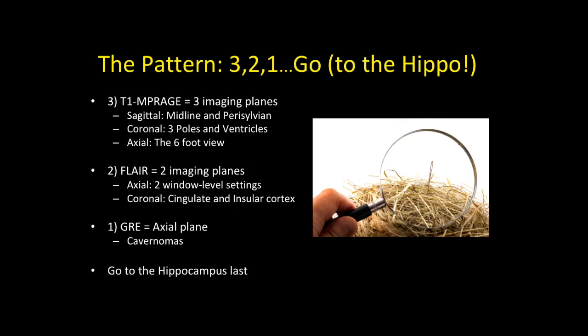My pattern, to make it catchy, is 'three, two, one, go to the hippocampus.' The three is for T1 MP-rage with three imaging planes — sagittal, coronal, and axial — each showing something a little different. The two is for FLAIR in two imaging planes at two different window level settings. One is for gradient echo or SWI, just in the axial plane, primarily for cavernous malformations. Then last, go to the hippocampus — just like reading a chest X-ray, you look at the lungs last.